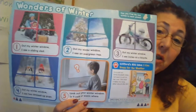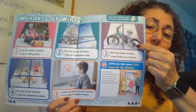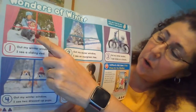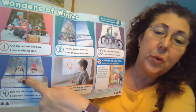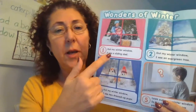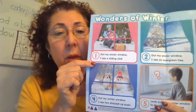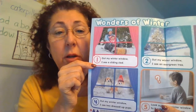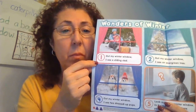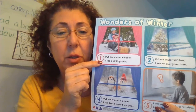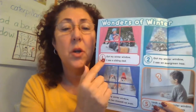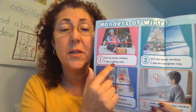Let's look at each color. Here's the purple window — put your finger on the purple window. Put your finger on the green window, the pink window, the blue window, and the orange window. Okay, let's start with the pink window. What are they doing outside that window? They're riding on something going down a hill. They're sledding! It says out my winter window I see a sliding sled.